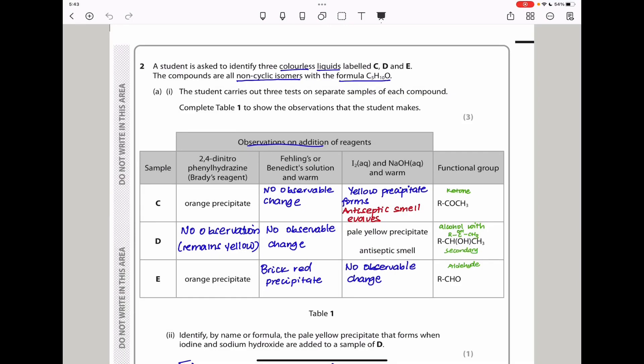Question two. A student is asked to identify three colorless liquids labeled C, D, and E. The compounds are all non-cyclic isomers with a formula C5H10O. The student carries out three tests on separate samples of each compound. They want us to complete table one to show the observations that the student makes. The samples are C, D, and E, and the reagents used are Brady's reagent, Fehling's or Benedict's solution, iodine in sodium hydroxide, and they've given us the functional groups. We can see that C is a ketone, D has a secondary alcohol, and E is an aldehyde.